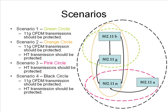Now let's go to scenario two, which is the orange circle. This type of network is practically possible and persists even in new deployments. In this case, both 11g and HT transmissions should be protected. 11g should be protected since 11b cannot decrypt 11g transmissions. Similarly, HT transmissions cannot be decrypted by both 11b and 11g devices since the transmission technology is different and the preamble is also transmitted at HT rate, except in the case of HT mixed mode frame format.